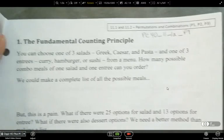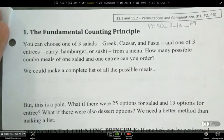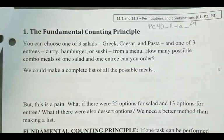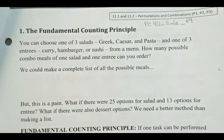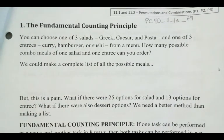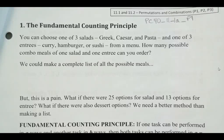So first thing we're going to look at is the fundamental counting principle. Let's look at the first question. So let's say you're going out for dinner and you can choose one of three salads — Greek, Caesar, pasta — and one of three entrees: curry, hamburger, or sushi. So how many possible combo meals of one salad and one entree can you order?